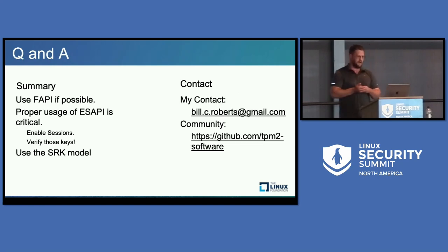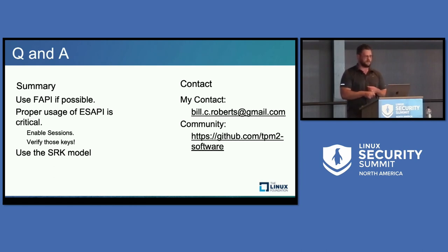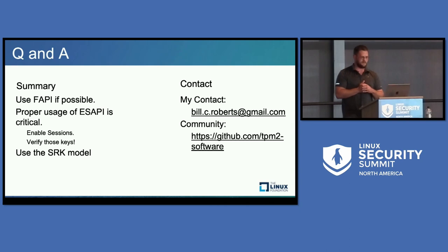In summary: use the Feature API if you can — you don't even have to worry about this, it does it for you. If you're going to use the Enhanced System API, do it correctly. Use the SRK — you don't need to be creating primary keys unless you have a very specific use case. That's my contact information and I'll open it up for Q&A.